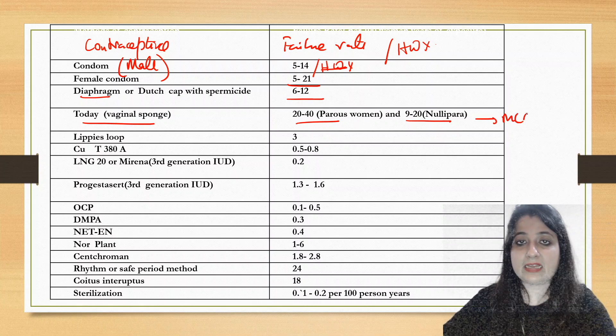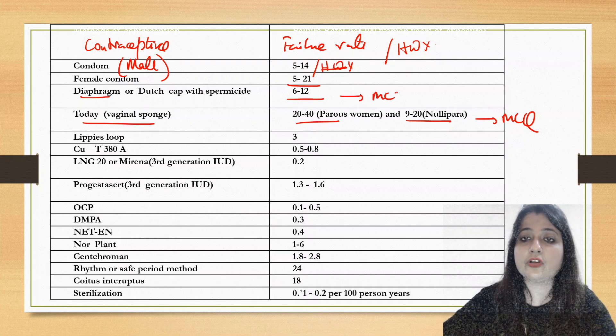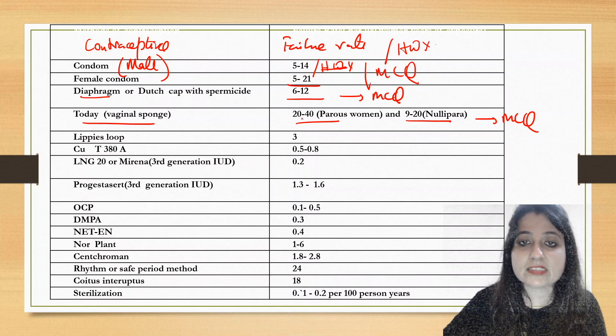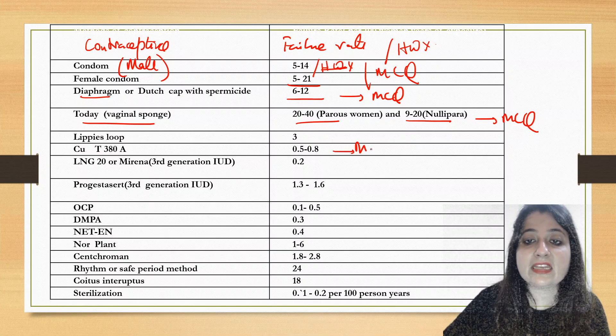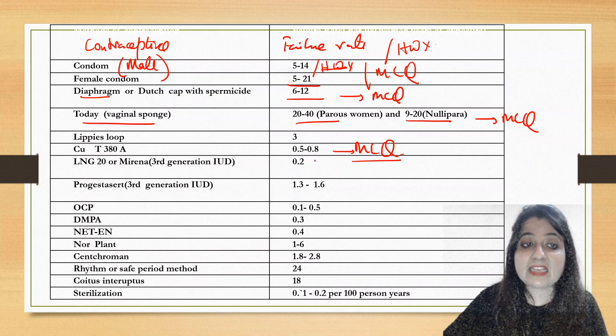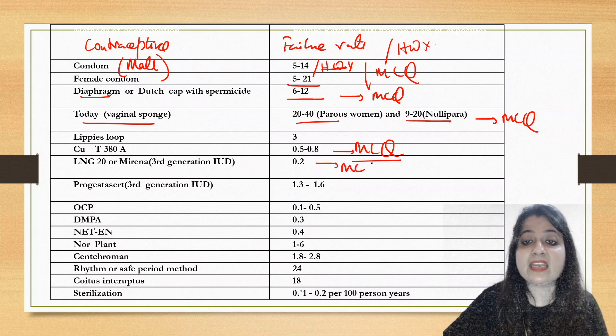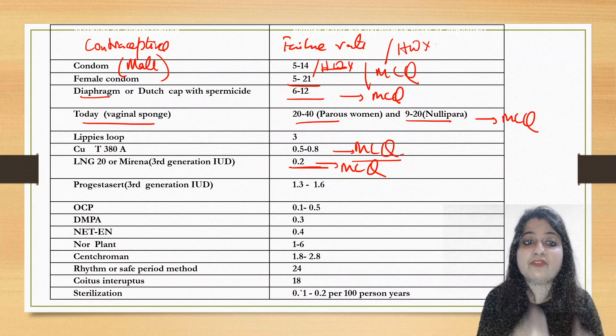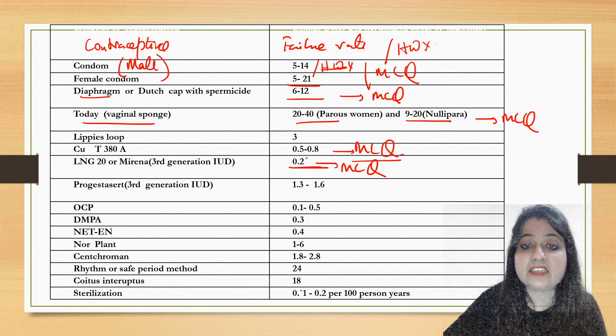Next, Lippes Loop of course is high. Look at Copper T 380A - this can come as an MCQ which is very very important. Myrena or levonorgestrel 20 can come as an MCQ. Out of all the intrauterine devices, levonorgestrel or Myrena has the least failure rate of 0.2.